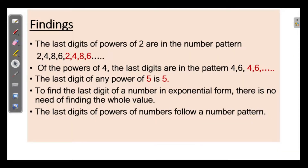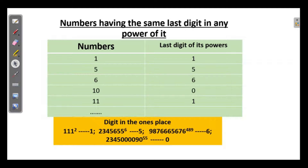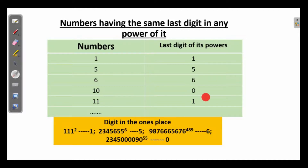Numbers having the same last digit in any power. Any power of 1 is 1 itself. The last digit of any power of 5 is 5. For any power of 6, the last digit is 6. For any power of 10, the last digit is 0. For any power of 11, the last digit is 1. The digit in the 1's place of these numbers is fixed — however large may be the number, whatever may be the power, the last digit remains the same.